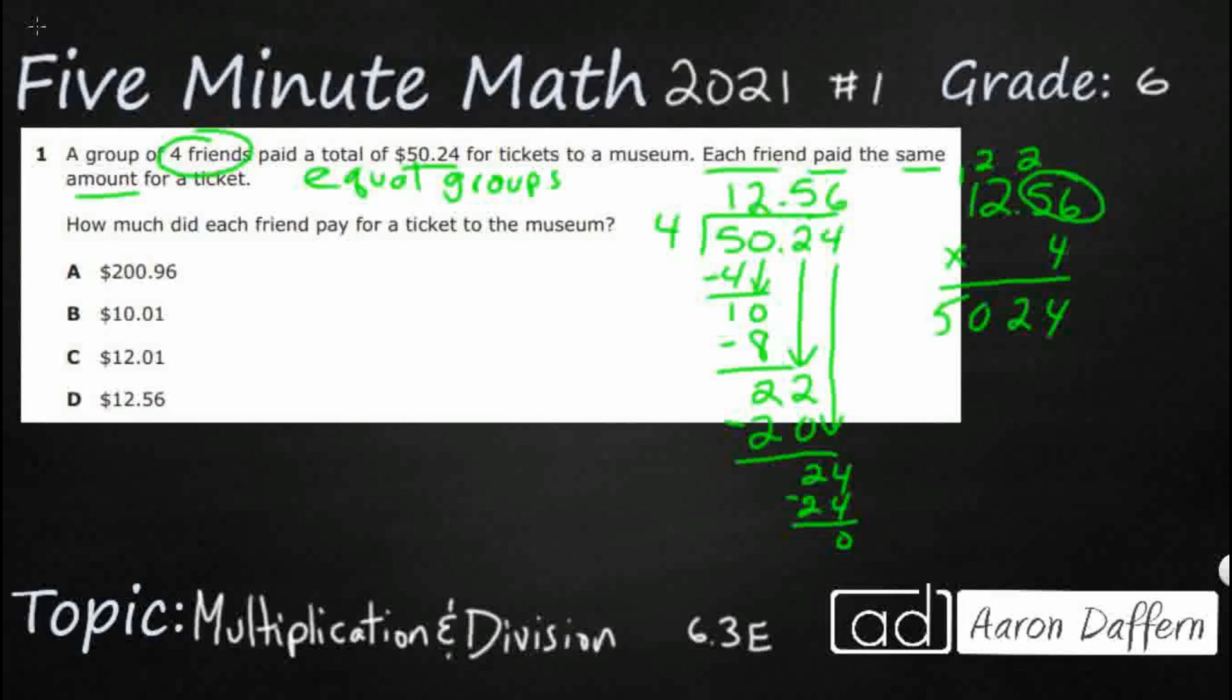I've got two digits behind the decimal in the factor, so I need two digits behind the decimal in the product. So my answer is going to be $12.56.